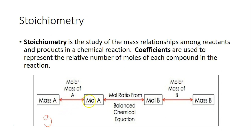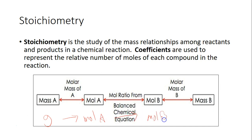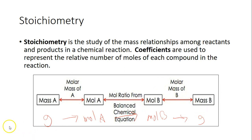We can go from mass to mole using molar mass. And once we're at mole, we can use our mole ratio, like we learned in the previous video, to go from moles of one substance to moles of another. And finally, once we're from moles of A to moles of B, we can calculate the grams of B using molar mass. That's what we're going to be doing in this video.